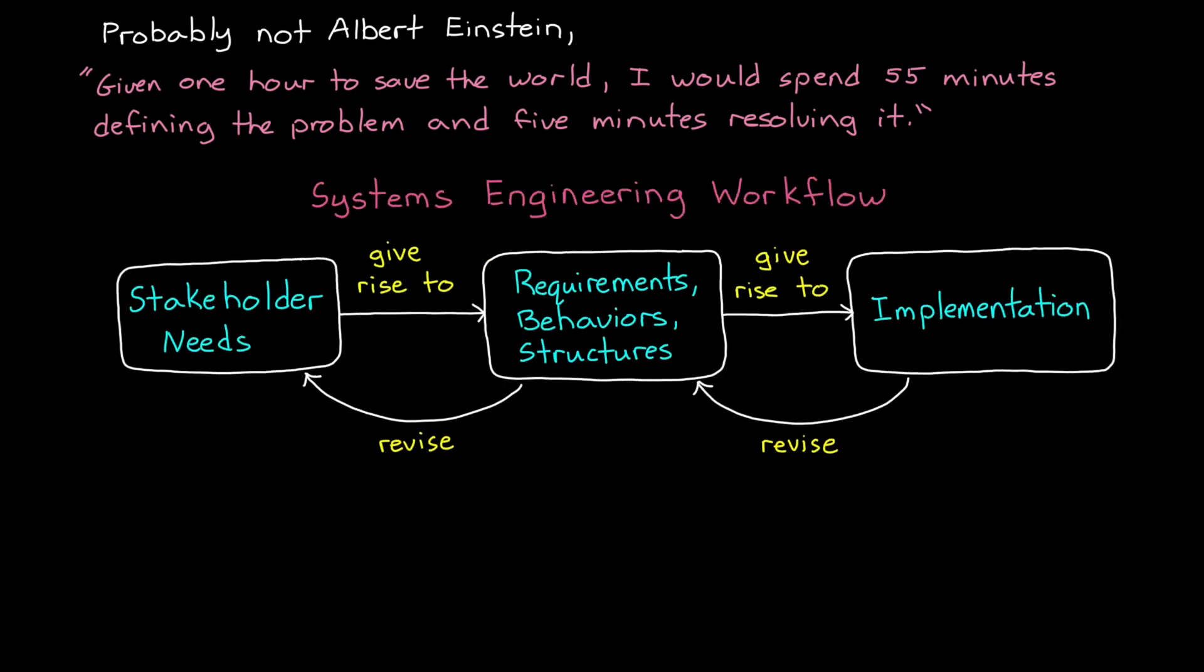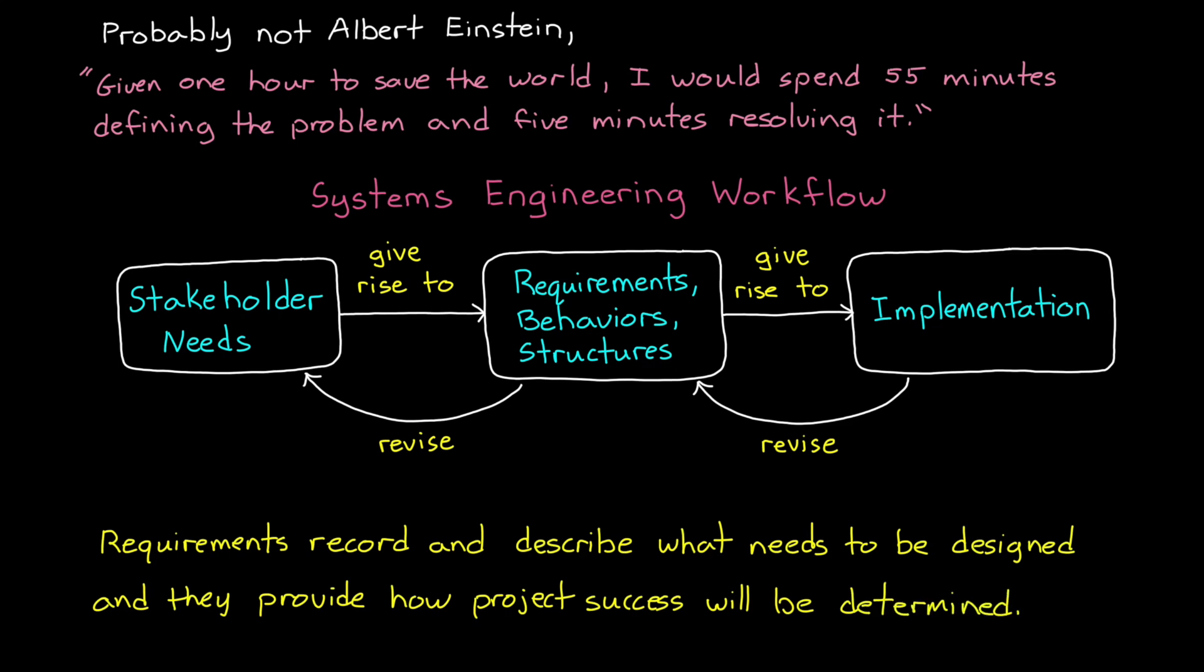There is a quote that is probably misattributed to Albert Einstein that goes something like this: Given one hour to save the world, I would spend 55 minutes defining the problem and 5 minutes resolving it. And even though this is a bit exaggerated, the idea is that time spent understanding and agreeing on what the problem even is can be more useful than the time actually solving it because it ensures that you are solving the right problem. And we've talked about how the systems engineering process is set up to do just this, to spend a lot of time defining the problem first. And this is where requirements come in. Requirements and their associated constraints and assumptions are a means for quantifying the problem to be solved. They are a way to record and describe what needs to be designed, and they provide how project success will be determined.